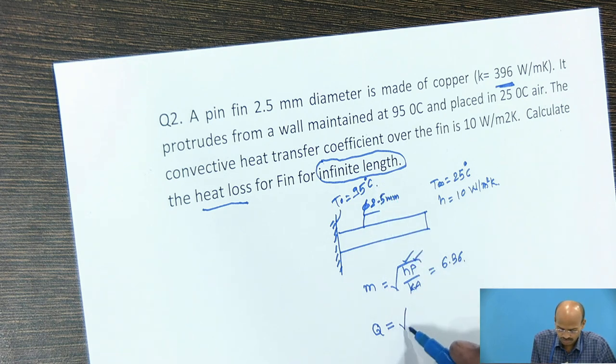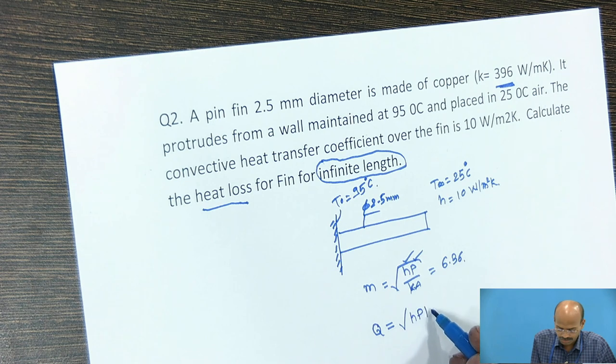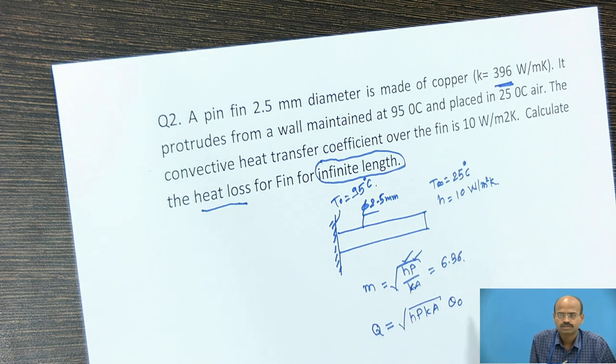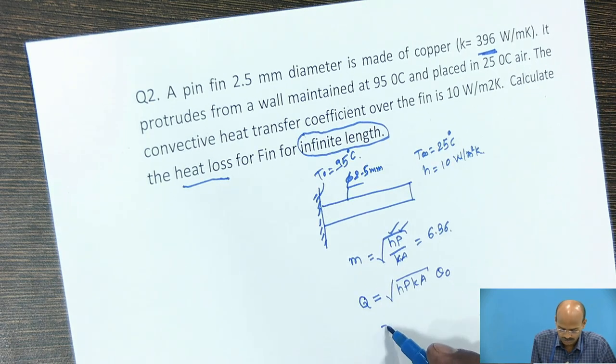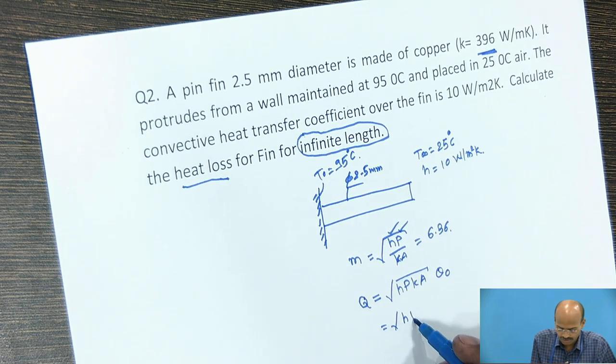So Q is equal to square root of HPKA theta naught, which is equal to square root of HPKA, theta naught is T naught minus T infinity.